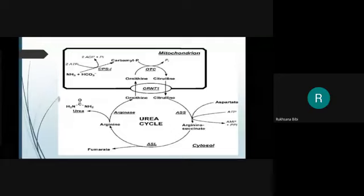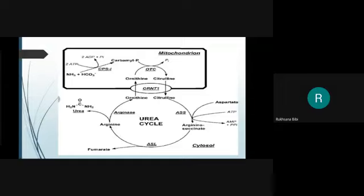The breakdown of argininosuccinate is catalyzed by argininosuccinate lyase enzyme, which cleaves argininosuccinate into arginine and fumarate. Fumarate is then converted to aspartate through several steps: first, fumarate is hydrated to malate by fumarase enzyme. Then malate is converted to oxaloacetate by malate dehydrogenase enzyme, with NAD⁺ acting as electron acceptor, which is reduced to NADH.